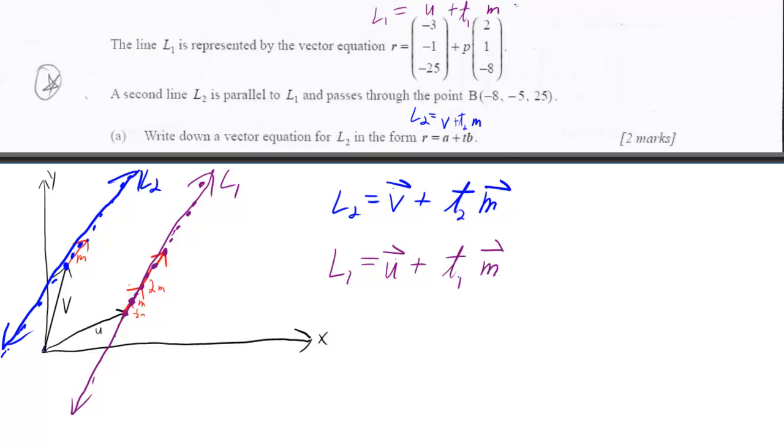This also works in three dimensions. So what would be our m in this particular problem? It would be the 2, 1, 8. So automatically we know that we're going to create line 2. We know what the m is going to look like. We know it's going to look like 2, 1, negative 8.